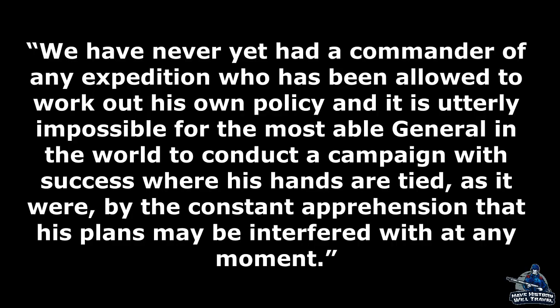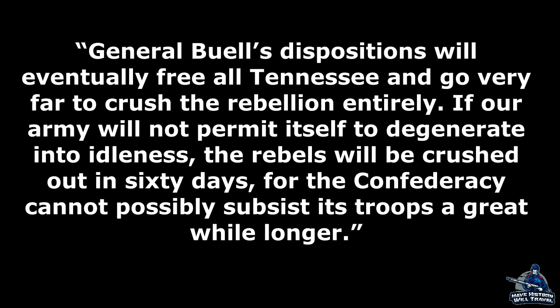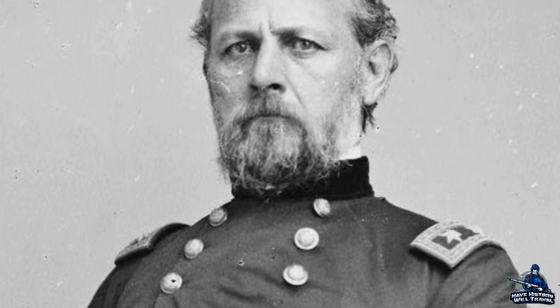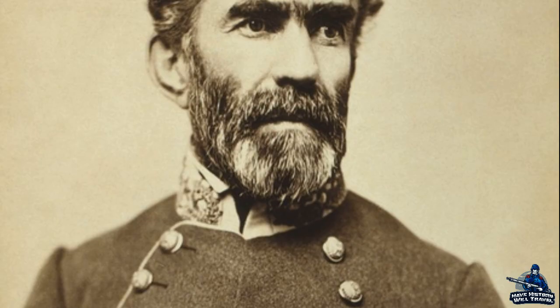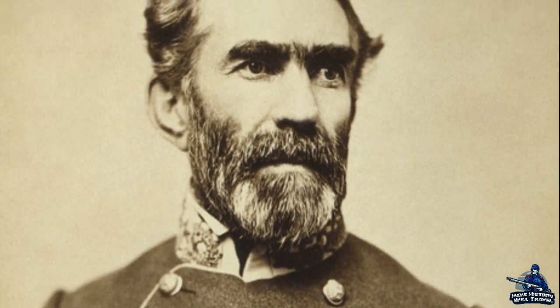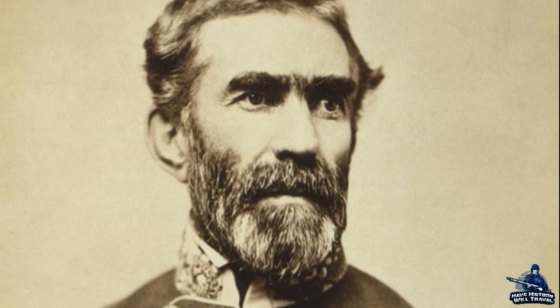Thomas wrote to Johnson, assuring him that General Buell's disposition will eventually free all Tennessee, and go very far to crush the rebellion entirely. If our army will not permit itself to degenerate into idleness, the rebels will be crushed out in 60 days, for the Confederacy cannot possibly subsist its troops a great while longer. In the late summer of 1862, while Buell waited, the Confederate Army of the Mississippi and the Army of East Tennessee began their heartland campaign that would take them into Kentucky. Braxton Bragg would move his army through the Cumberland Plateau and remain, for the most part, undetected until he emerged out of the plateau either toward Nashville or Kentucky.